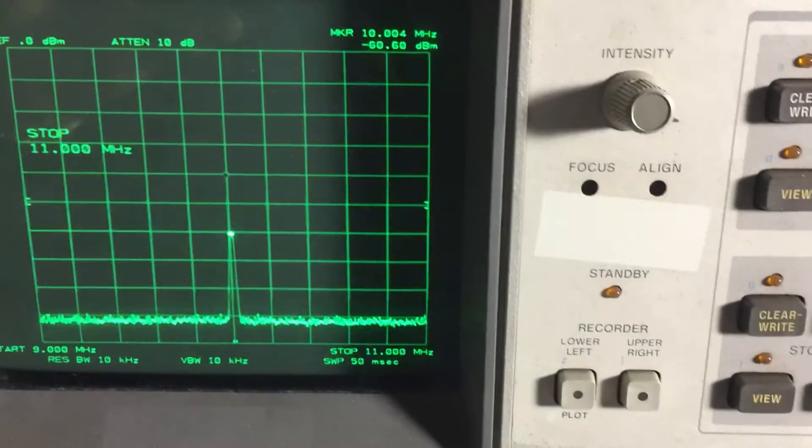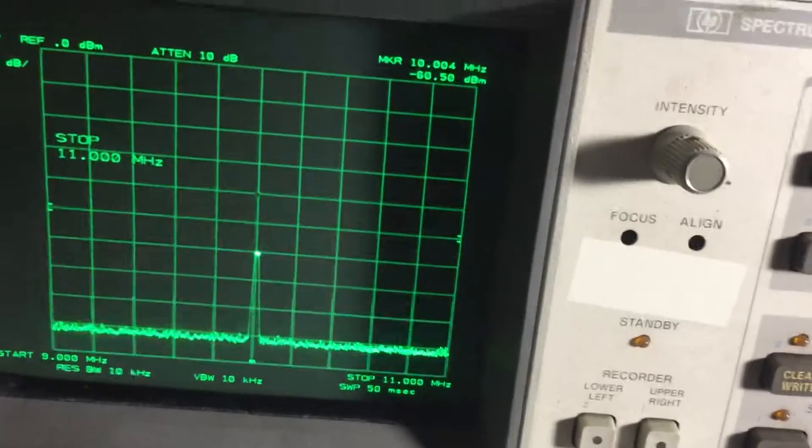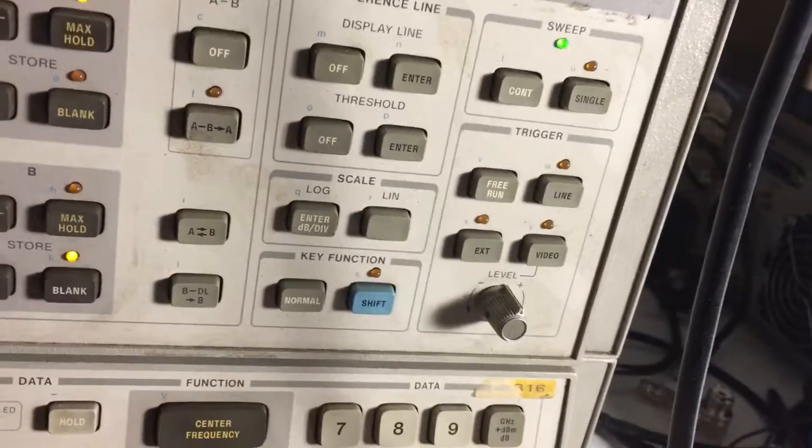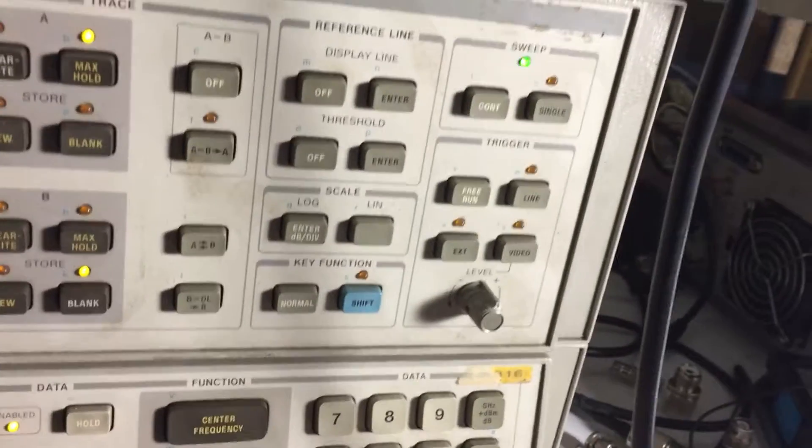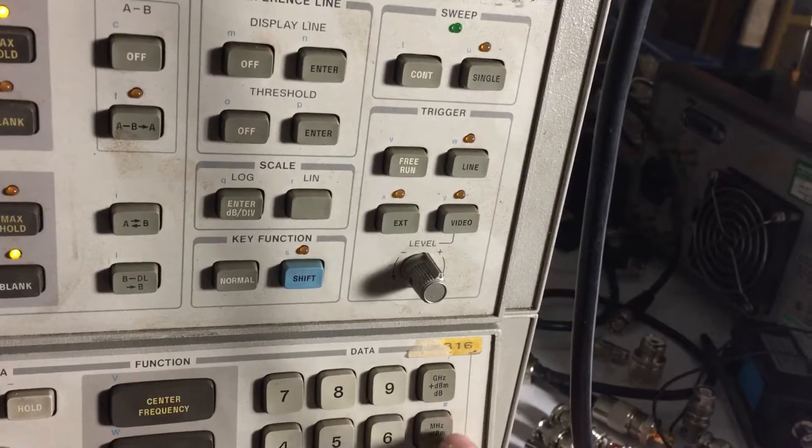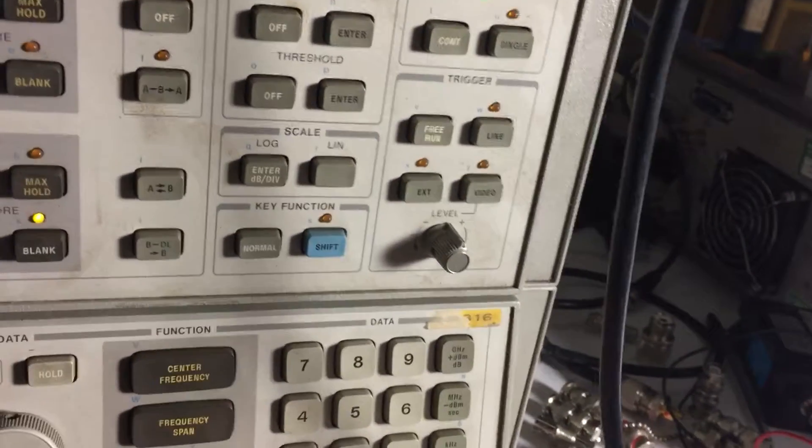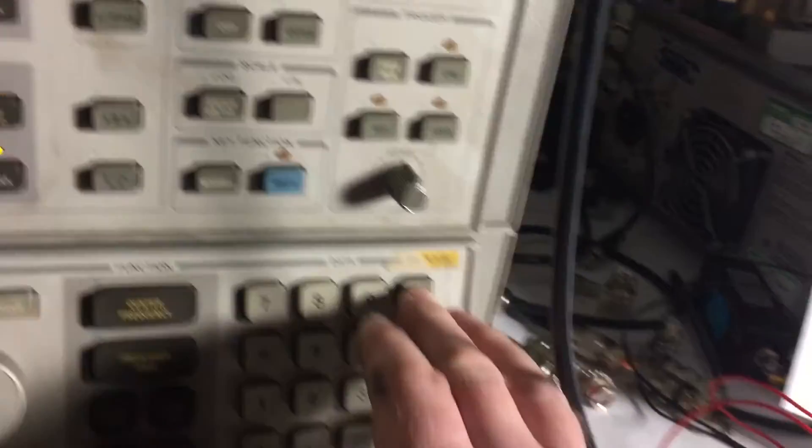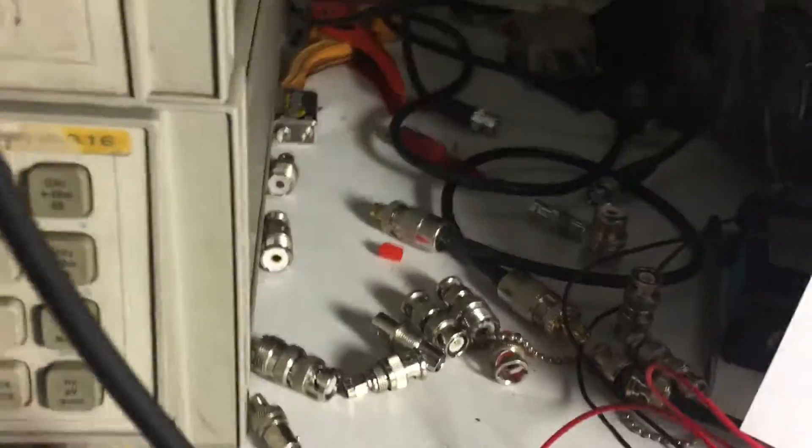If we now jump up to one gig, so one two three, stop frequency of 995 meg, stop 1.005 gig. There we go. So we'll repeat the exercise, put the pass-by back on.